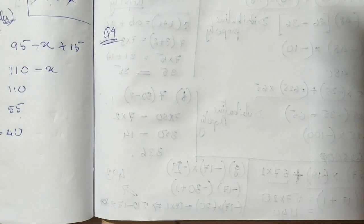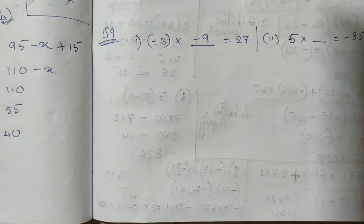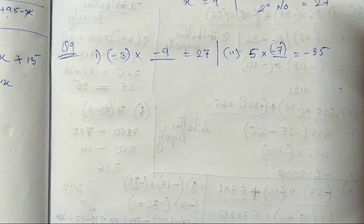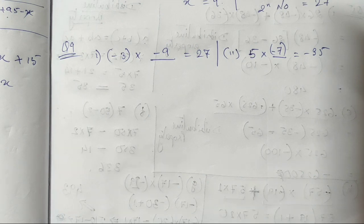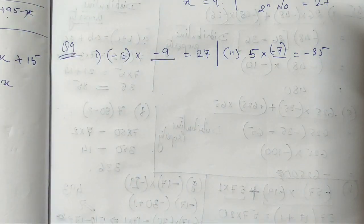Question 9 is fill in the blanks. -3 multiplied by what gives 27? The answer is -9. Five multiplied by what gives -35? That is -7. What multiplied by -8 gives -56? That is 7. The remaining parts are similarly straightforward. This concludes the video — thank you, stay home, stay safe, and keep practicing.